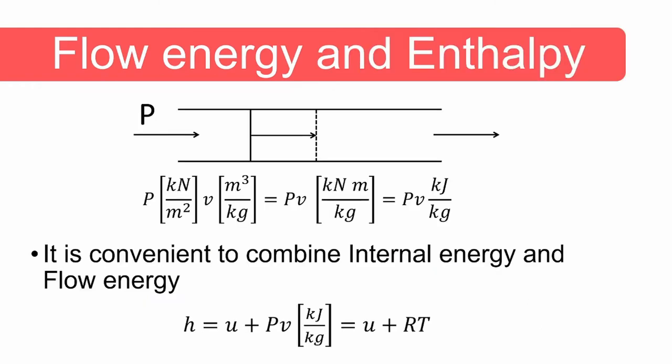Therefore, the energy required to cause one kilogram of fluid to flow is equal to P multiplied by the specific volume of the fluid, and is called flow energy. It is convenient to combine internal energy and flow energy into one variable: enthalpy.